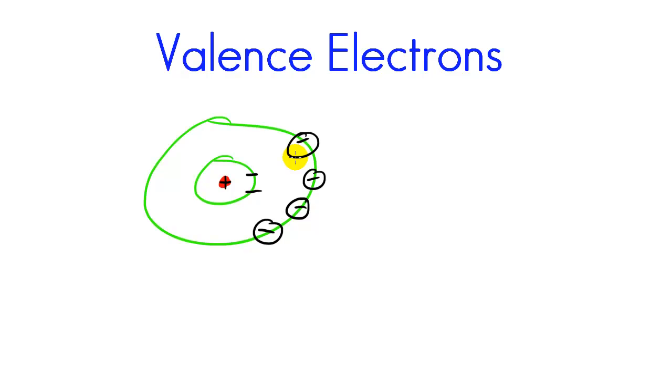So whenever you have a chemical reaction that takes place, the farthest ones away are the first to go because they have less of an attraction than these ones right here. And that is basically what valence electrons are—the electrons on the outermost energy level. That's all you need to know.